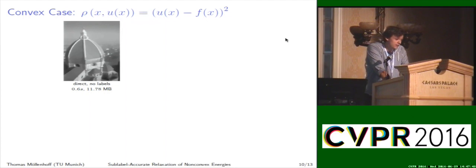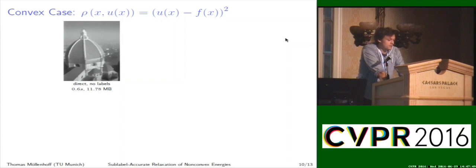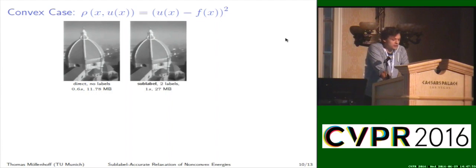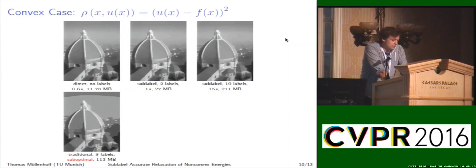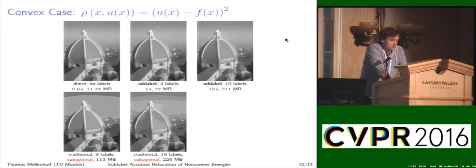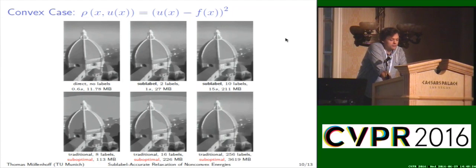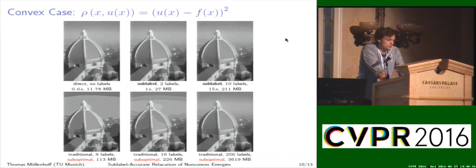We evaluated our method first on a convex model, where we can compute the globally optimal solution using the direct optimization method. Our sub-label accurate approach finds the same solution as the direct optimization with almost no overhead, providing a natural transition between direct optimization and functional lifting. Even with 10 labels, we find the exact same solution as the direct optimization approach. The traditional multi-labeling methods, even with 8 labels, converge to suboptimal results while requiring much more memory. Even for 256 labels — amounting to an optimization problem of size 3.6 gigabytes — the result is still suboptimal, while our proposed method with just two labels already yields the correct solution.